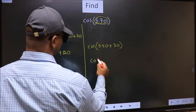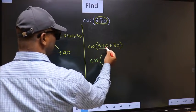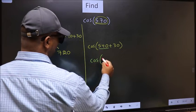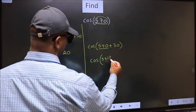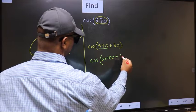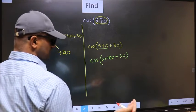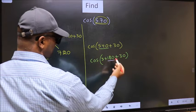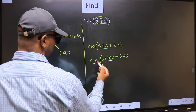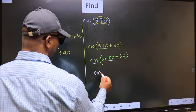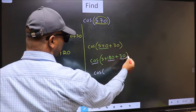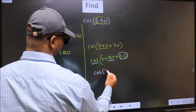Cos. In place of 540, now we should write 3 into 180 plus 30. Next. Here we have 180. So, cos is not going to change. It will remain cos. And inside, we get this angle 30.